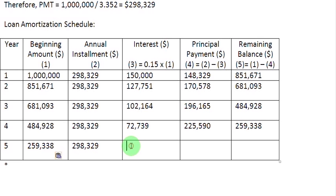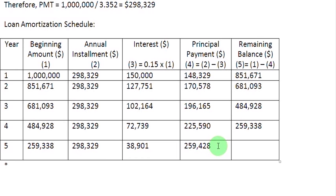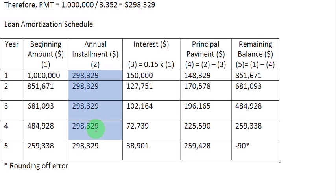In year 5, you are making a payment of 298,329, out of which the interest amount is 38,901 — that is 15% of 259,338. The principal repayment is the difference between the installment and the interest, which comes to 259,428. The remaining balance is 259,338 minus 259,428, which comes out as minus 90 — that is a rounding error. So that is how your loan is amortized over five years when paying an equal installment of $298,329 per year. Thank you very much.